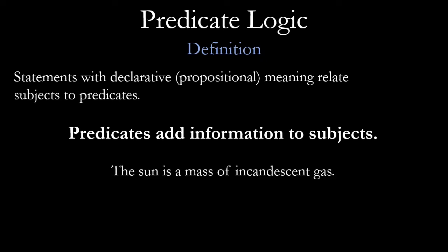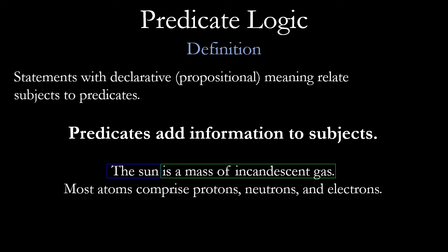For example, take the sentence: the sun is a mass of incandescent gas. The sun is the subject, and 'is a mass of incandescent gas' is the predicate. That's the information that is being added to the subject, which is the sun.